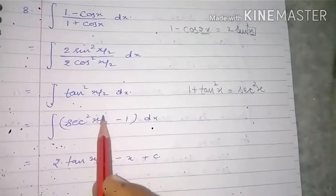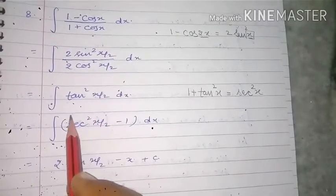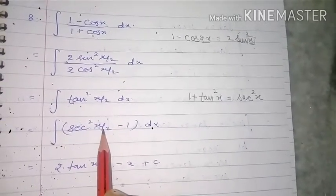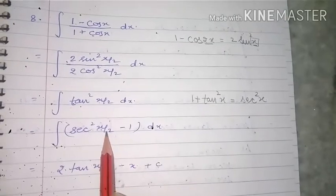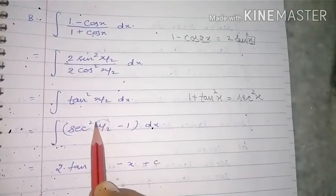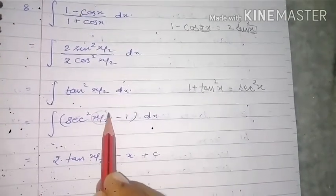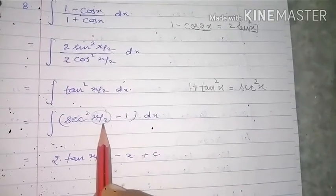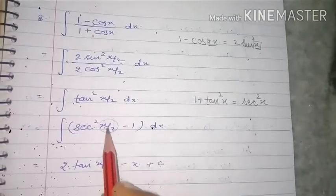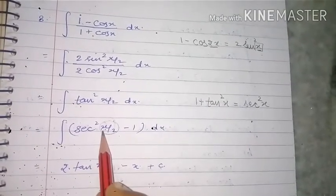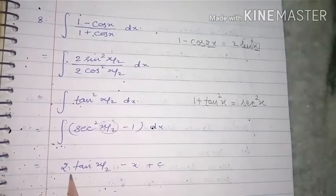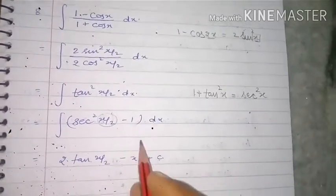Hamare paas in dono terms ke liye direct formula hai. sec²x ka integration tanx hai, lekin yahan x ke place pe x/2 given hai, jo ki linear term hai. Linear term hone par hum direct formula use kar sakte hain: integral of sec²(x/2) dx = tan(x/2) divided by the coefficient of x, which is 1/2.